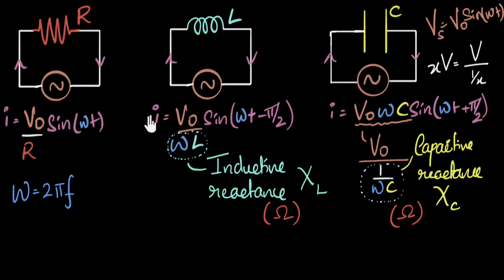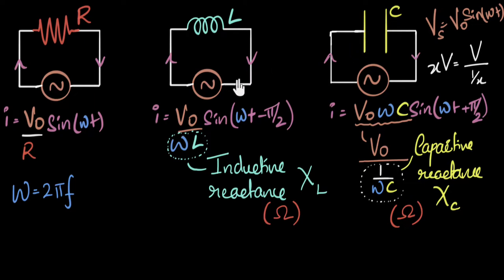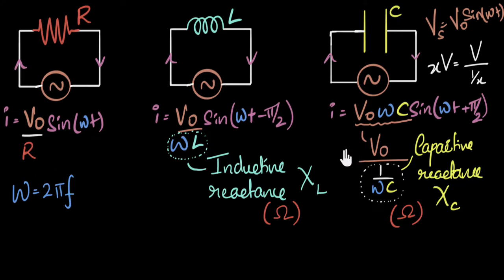The second major difference involves energy and power. When resistors limit current, they convert energy into heat — power gets dissipated. Whereas when inductors or capacitors limit current, they do not convert energy into heat. Instead, they store the energy temporarily and transfer it back. So resistors dissipate heat, whereas reactances don't. We'll talk more about power dissipation in future videos.